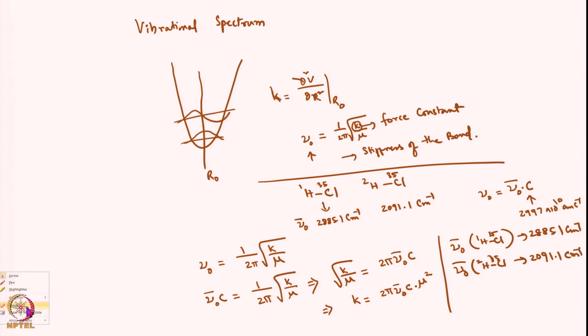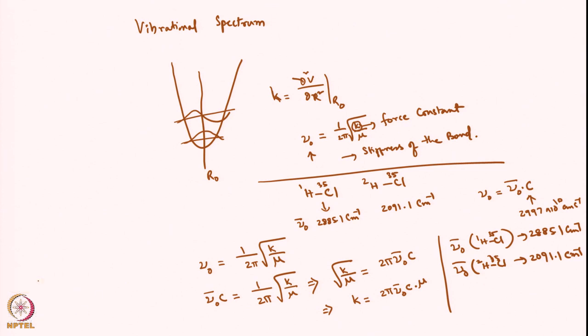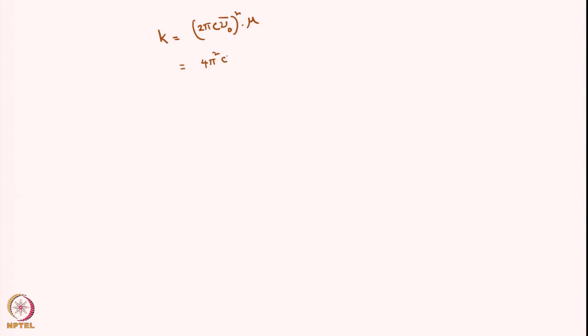I made a mistake — this should be the square of the expression. So k is equal to 4π² × c² × (μ_naught_bar)² × μ. Here, 4π² × c² uses c = 2.997 × 10¹⁰ cm/s, and μ_naught_bar = 2885.1 cm⁻¹ for HCl.